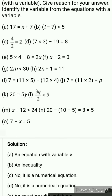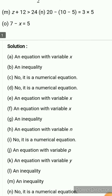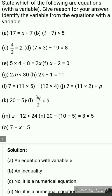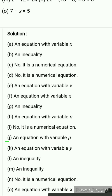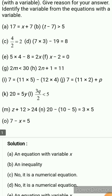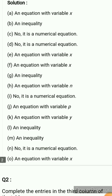Next is 7 equals 11 multiplied by 5 minus 12 multiplied by 4 — this is an equation but it is a numerical equation, so no variable. Next is 7 equals 11 multiplied by 2 plus p — this is an equation with variable p. Next one is 20 equals 5y — again an equation, this time with variable y.